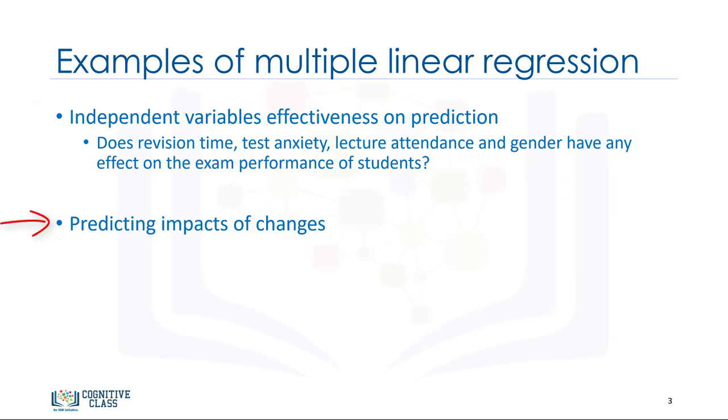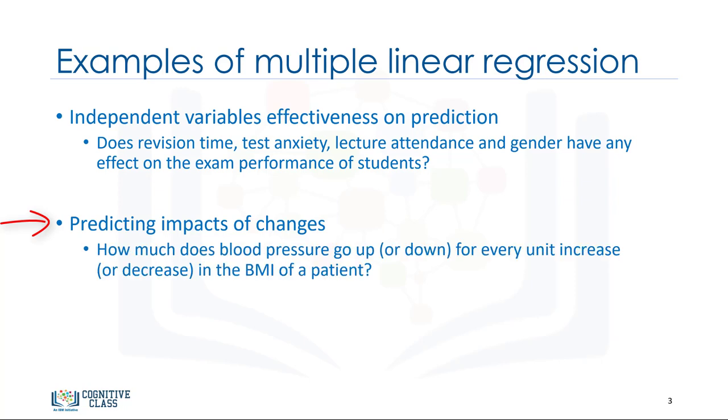Second, it can be used to predict the impact of changes. That is, to understand how the dependent variable changes when we change the independent variables. For example, if we were reviewing a person's health data, a multiple linear regression can tell you how much that person's blood pressure goes up or down for every unit increase or decrease in a patient's body mass index, holding other factors constant.